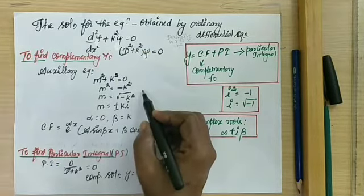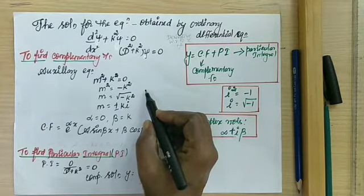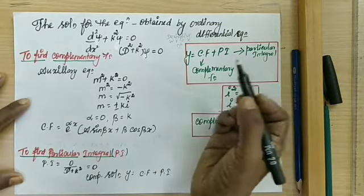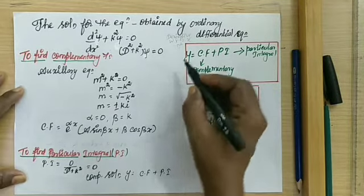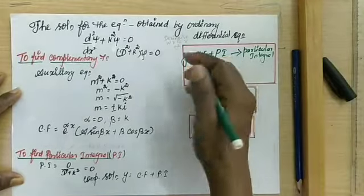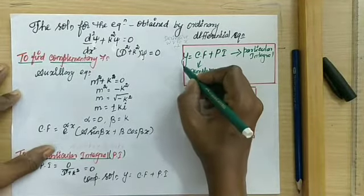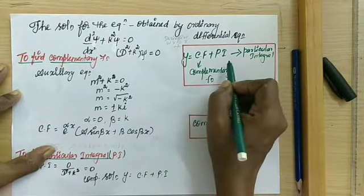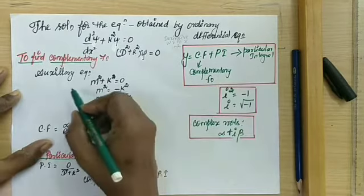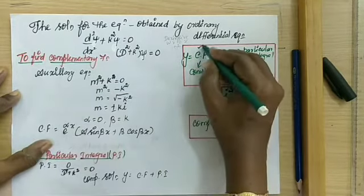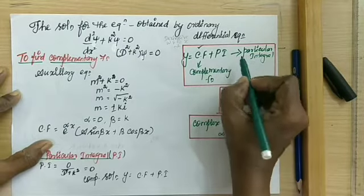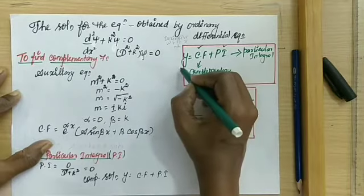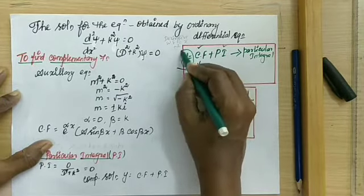As our differential equation says, it is an equation that involves the unknown function and its derivatives. The unknown function is called the solution. We can obtain the solution using the form: y is equal to the sum of the complementary function plus the particular integral. Let us find out the complementary function first, then the particular integral, and then the full solution.